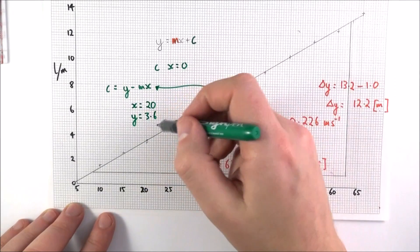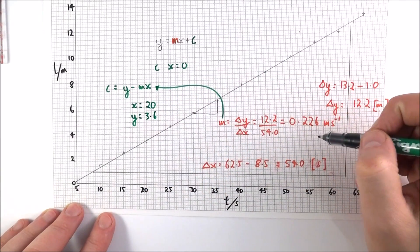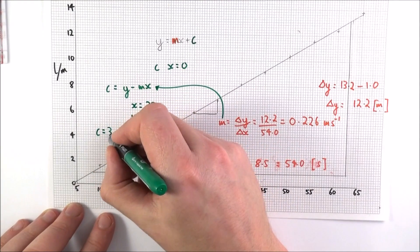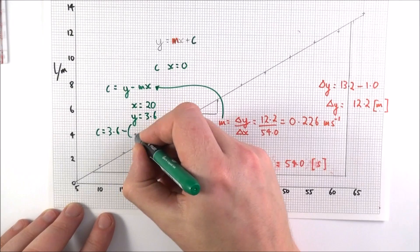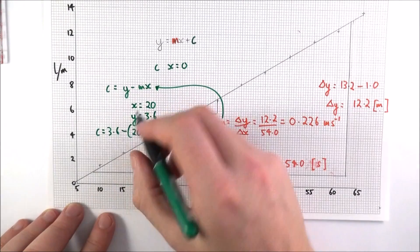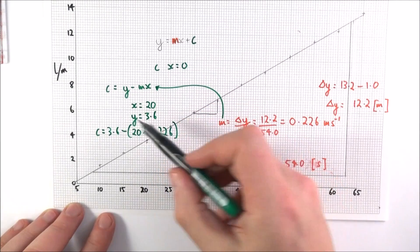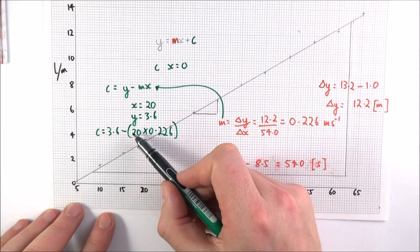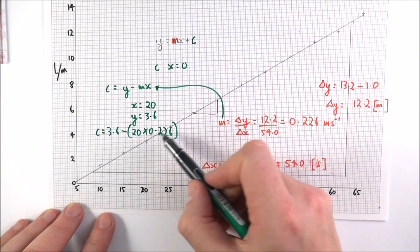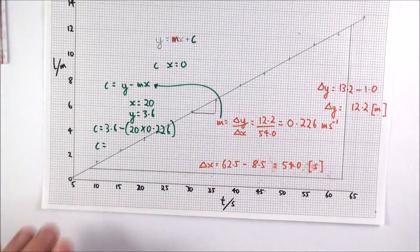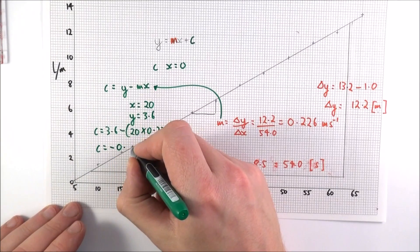If I put these numbers in using this calculated gradient here, it then says that c is equal to 3.6 minus a value of 20 multiplied by 0.226. So this is my y minus m times x. And therefore the value of c is equal to minus 0.919.